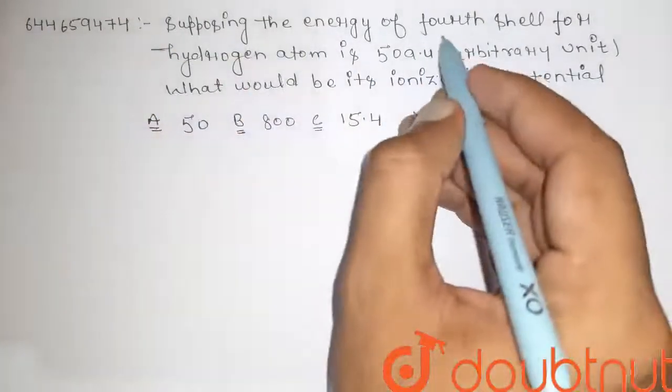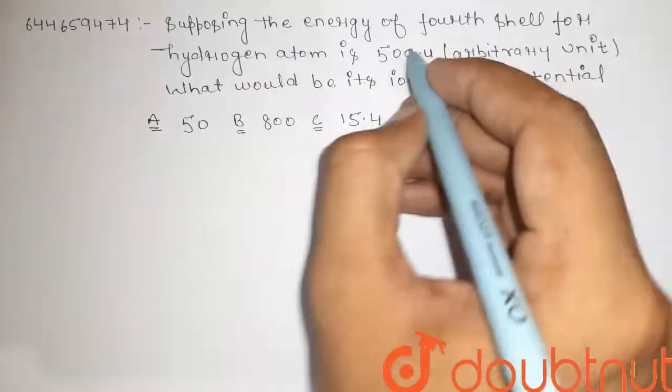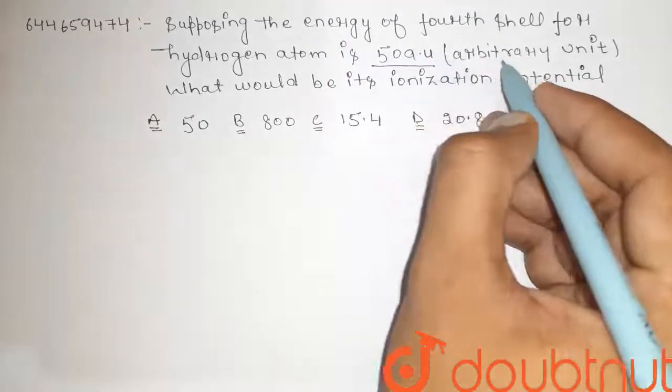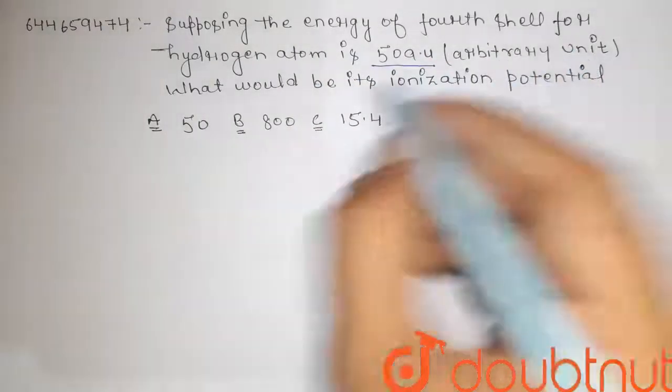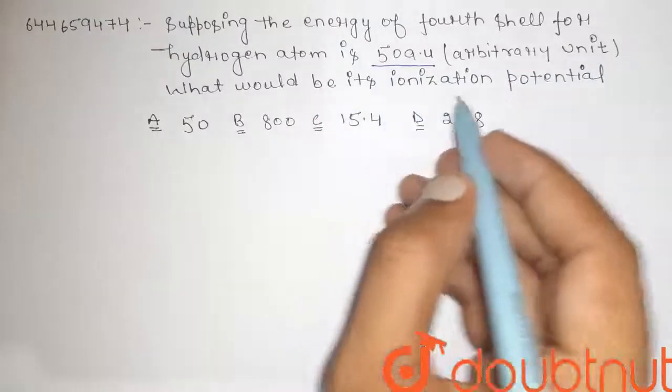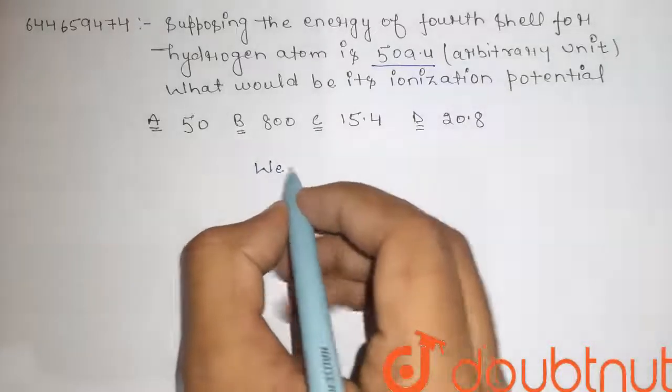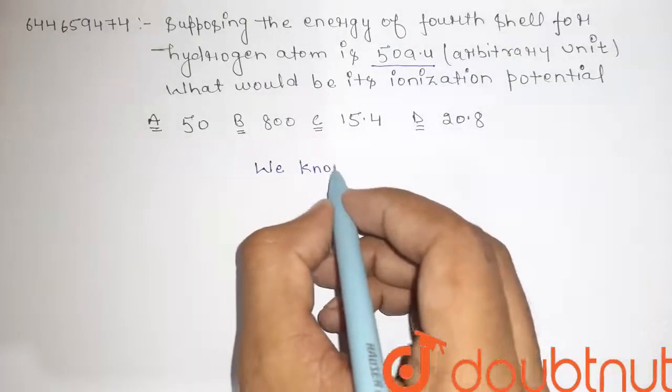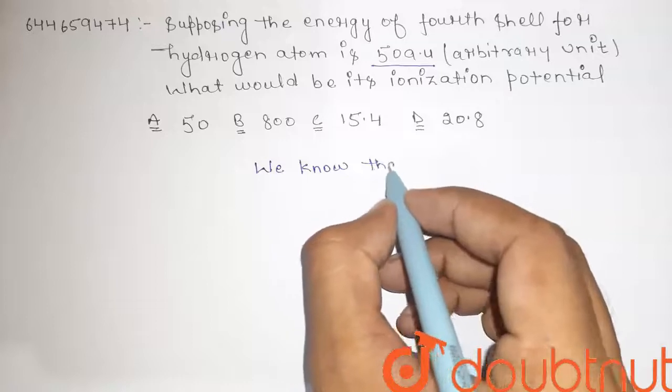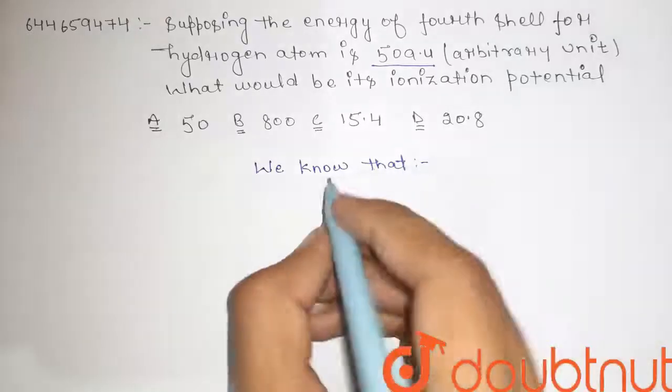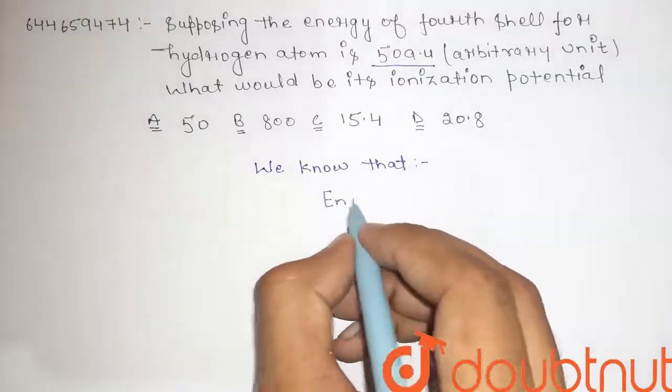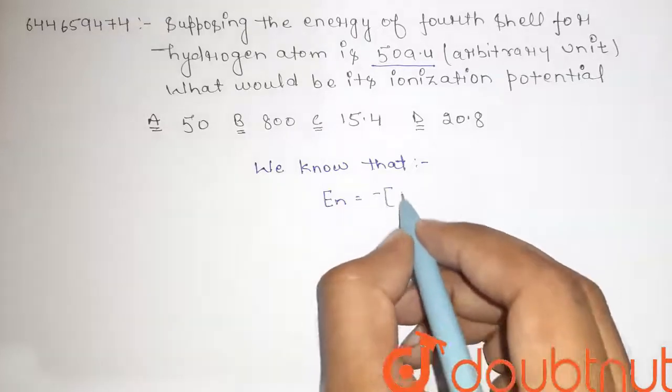Hi guys, here is the question. Supposing the energy of fourth shell for hydrogen atom is 50 au, which is arbitrary unit, what would be its ionization potential?